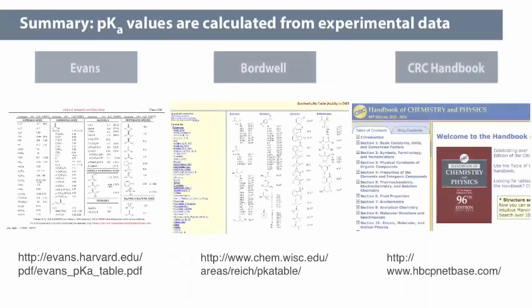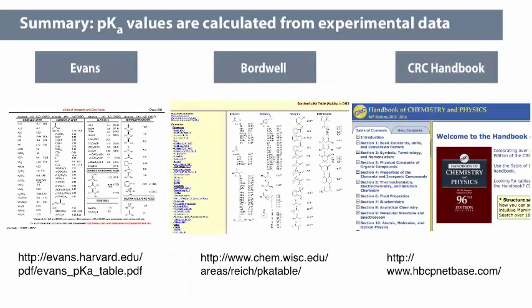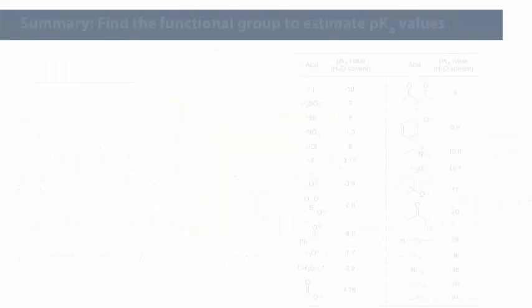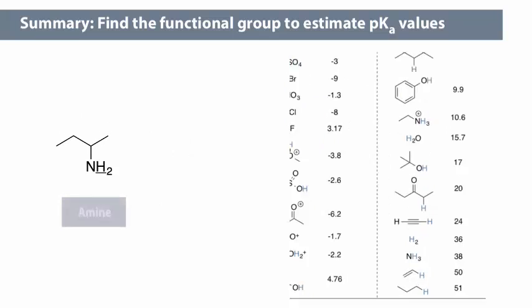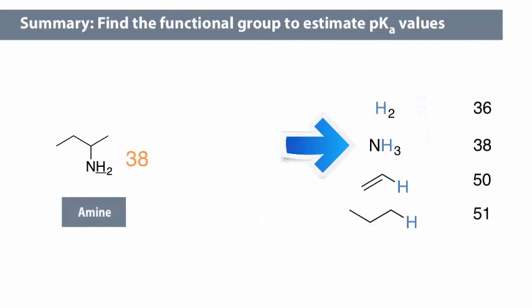In summary, in this video we learned that pKa values are calculated from experimental data and can be found in reliable sources. We can find or estimate pKa values using a simplified pKa table. To do so, we identify the functional group bearing the proton in question, then find that functional group in a pKa table.